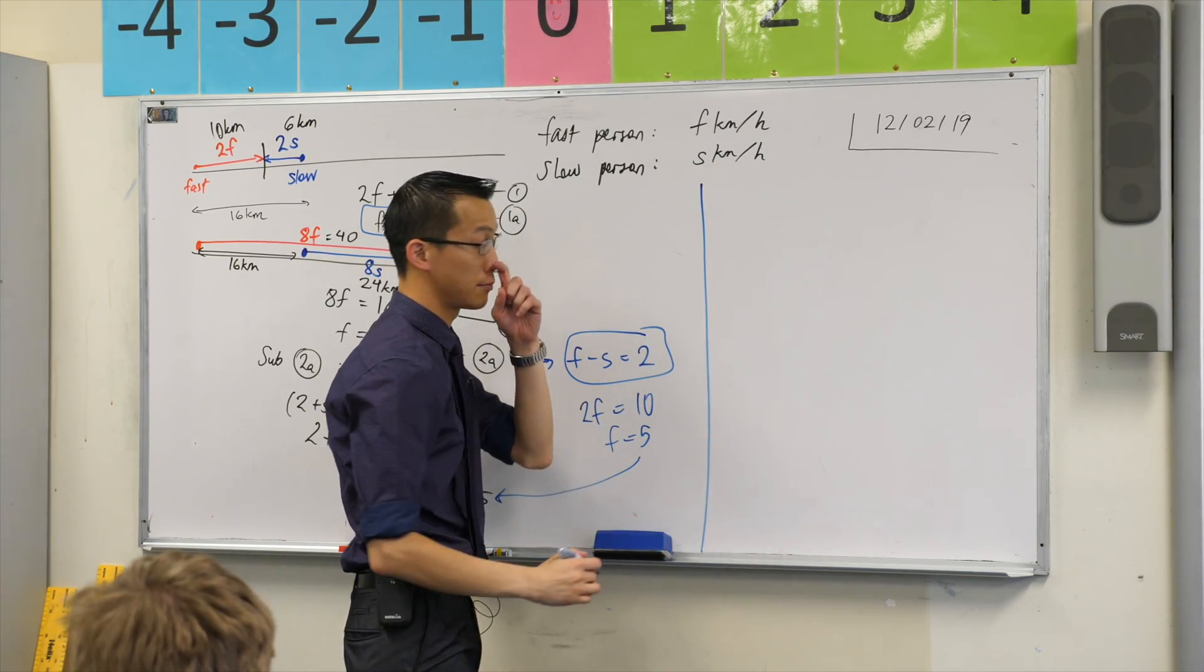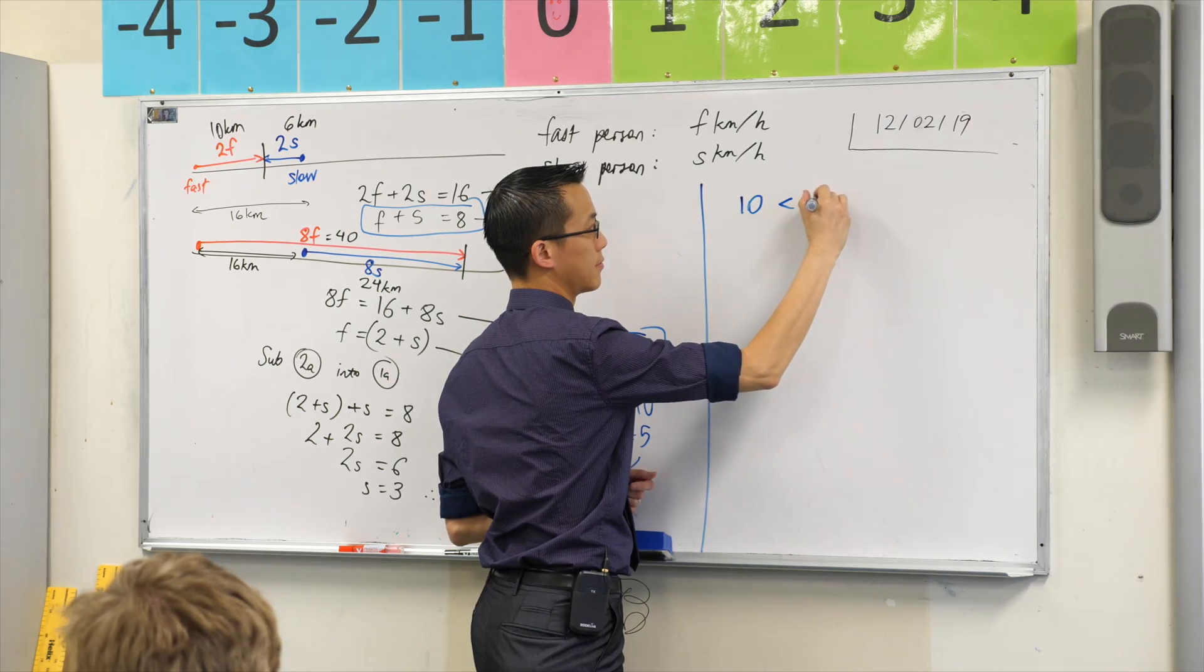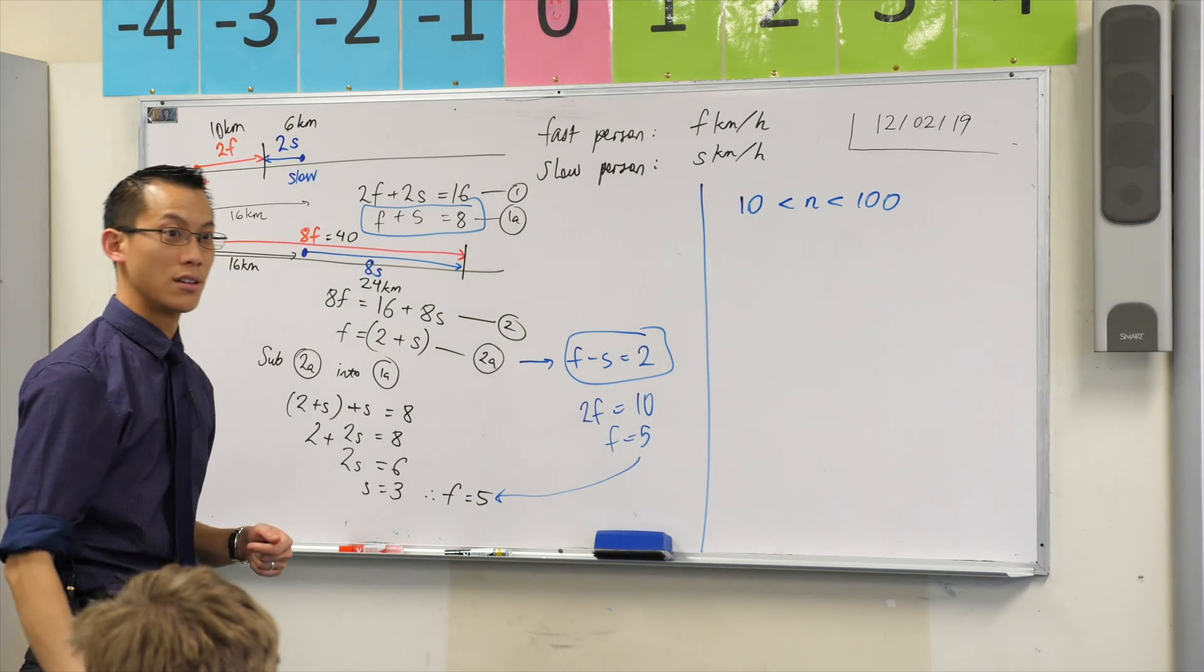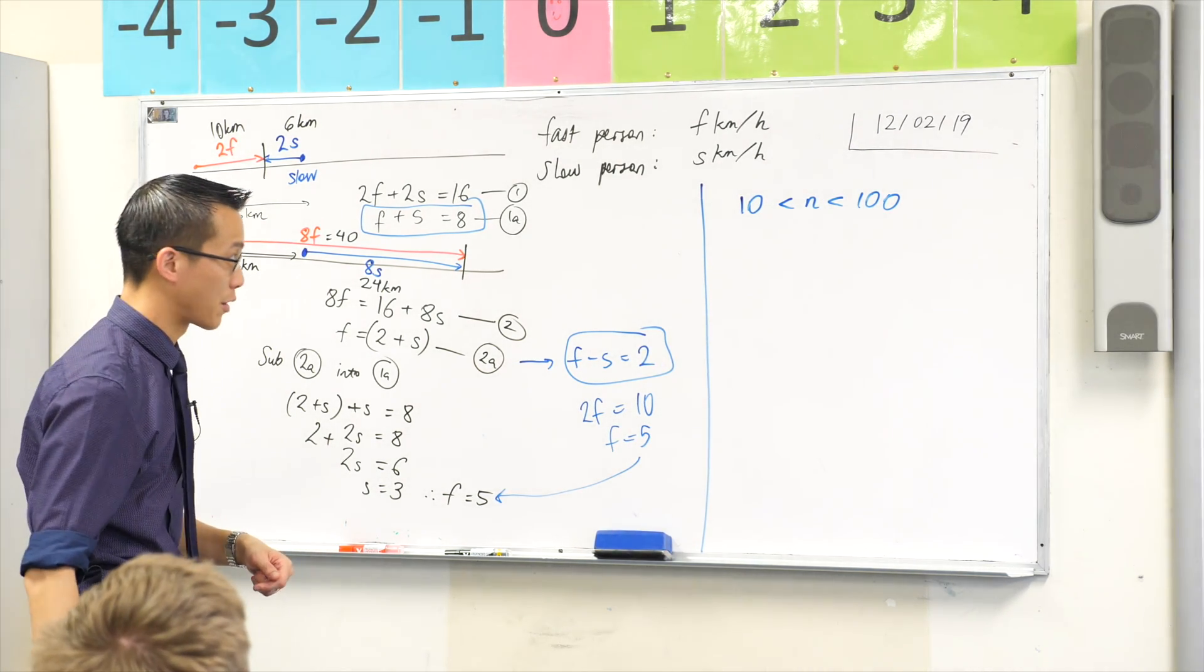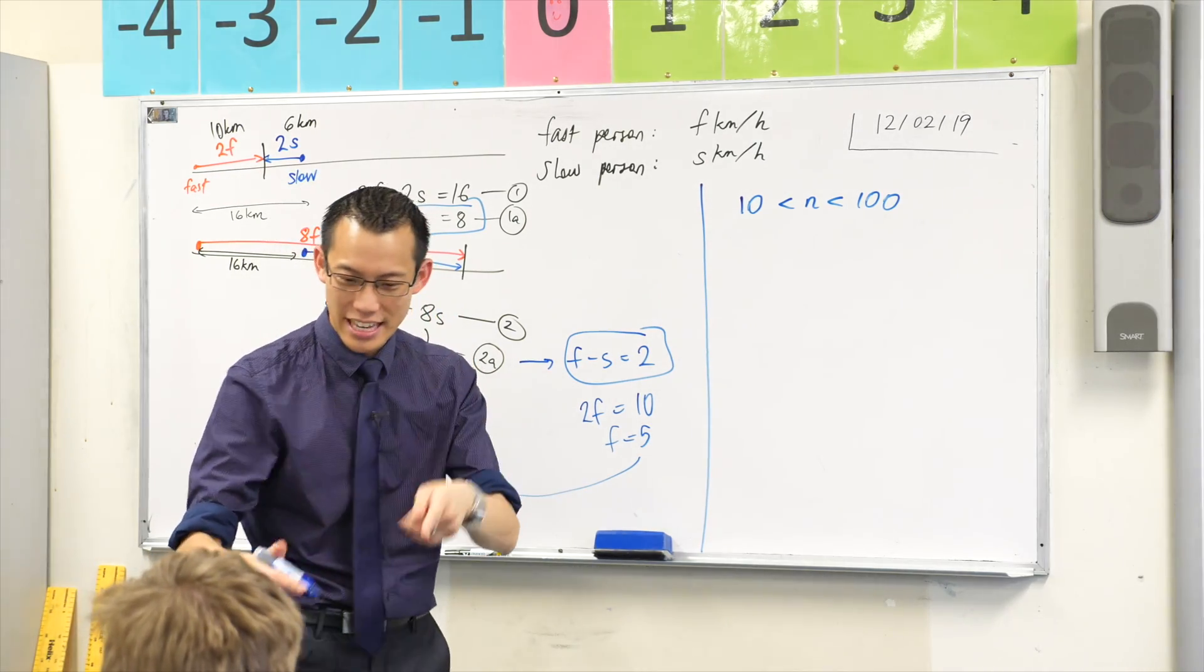A certain integer between 10 and 100, its value is 8 times the sum of the digit, and if it's reduced by 45, its digits are reversed by the integer. That was a mouthful for me too. I barely understand that. Let's have a look at it slowly together. We'll unpack it bit by bit.